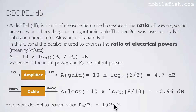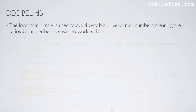To convert the decibel value to a power ratio you can use this equation. The logarithmic scale is used to avoid very big or very small numbers, meaning the ratios. Using decibels is easier to work with.